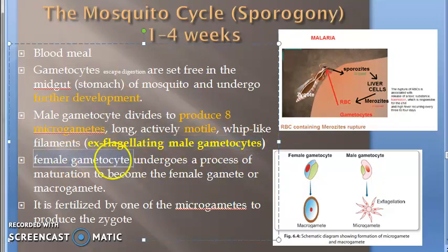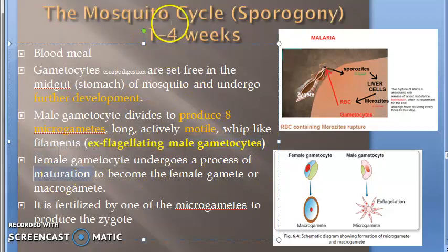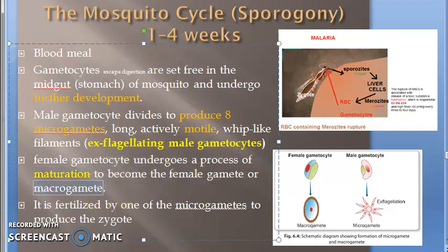As for the female gametocyte, it becomes mature and it becomes a female gamete, also called a macro gamete.